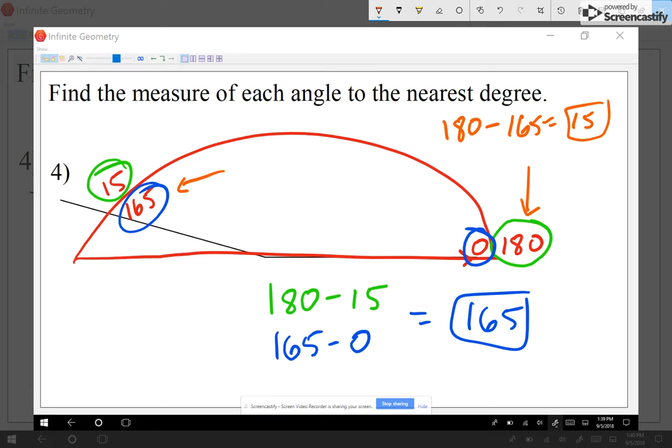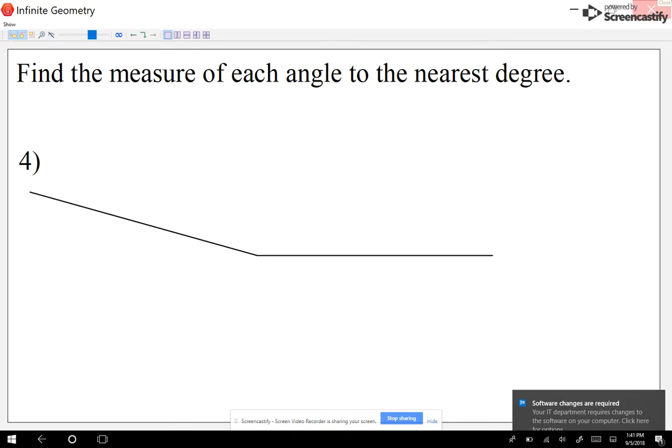When I do it incorrectly, so let me put a big X on it. When I do it incorrectly, I get a 15. Then I look, I use my logic, and I'm like, yeah, this is way bigger than 15. So not even close. Any questions on these? No.